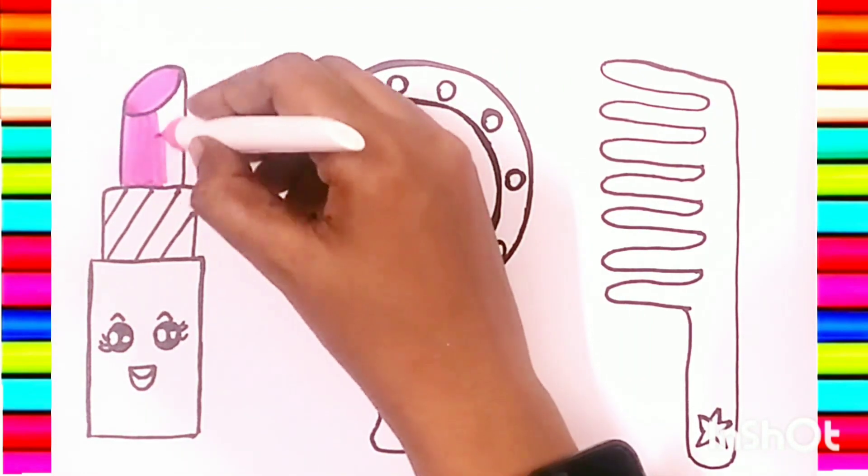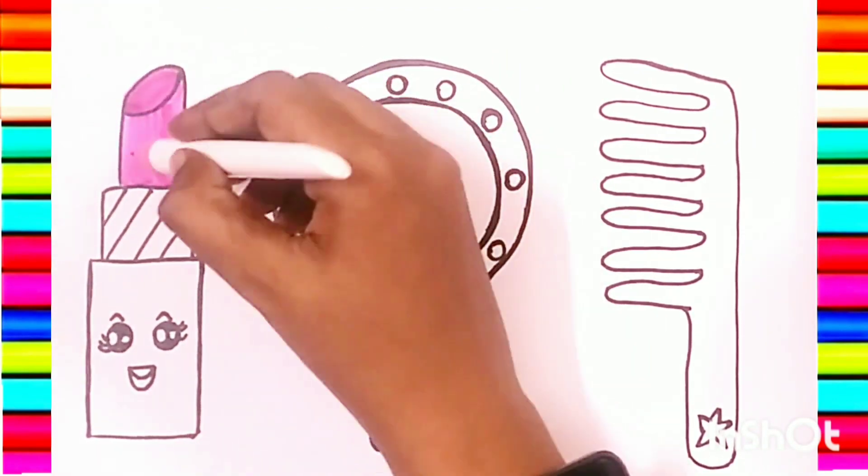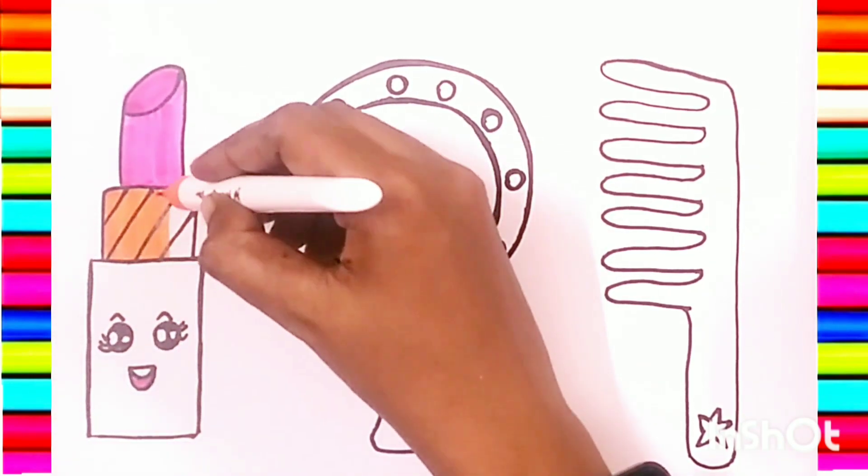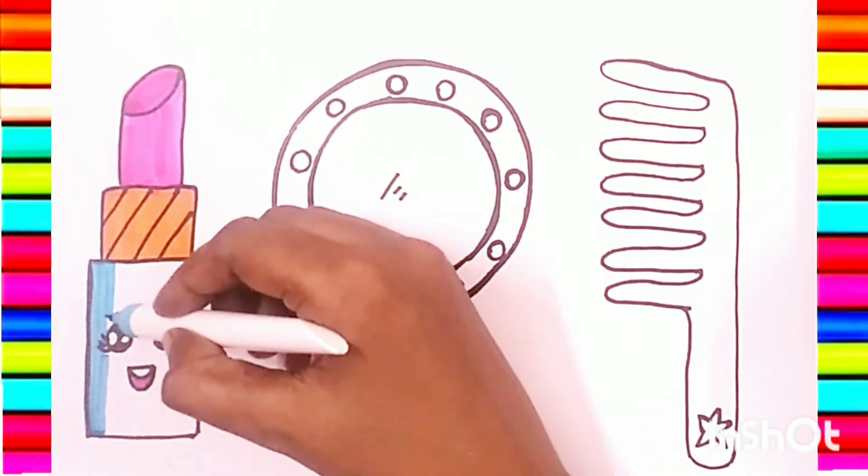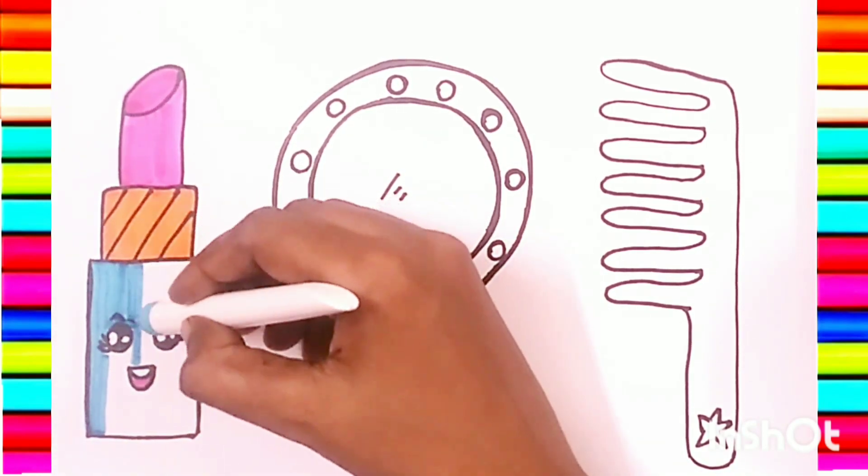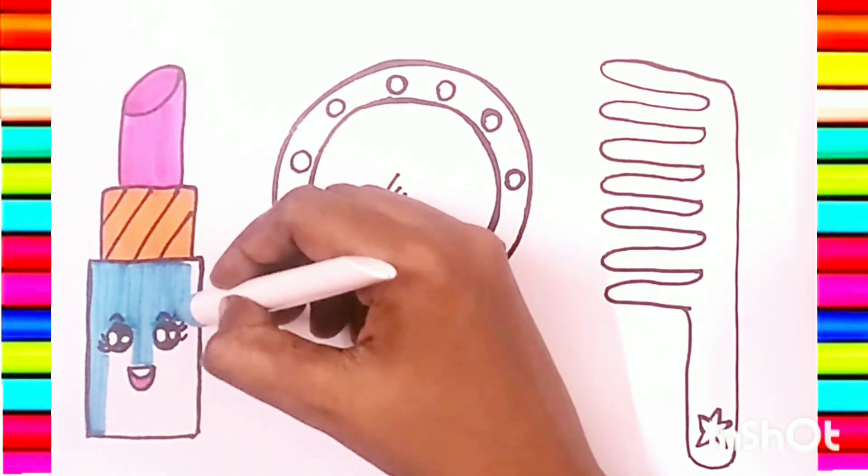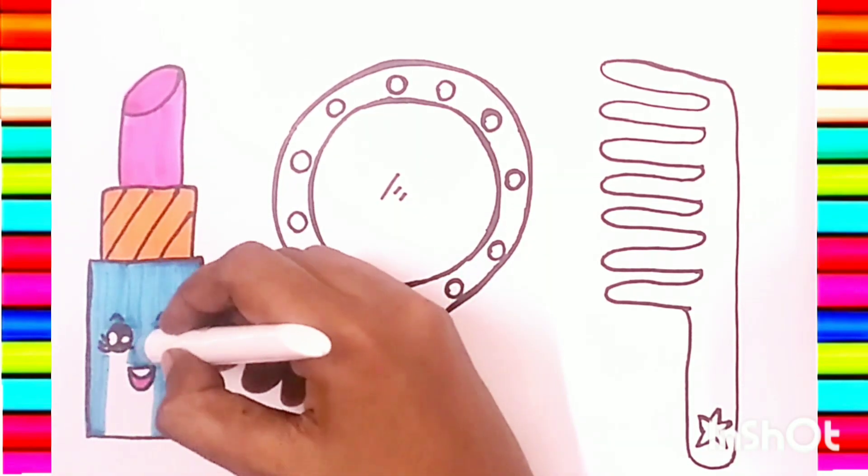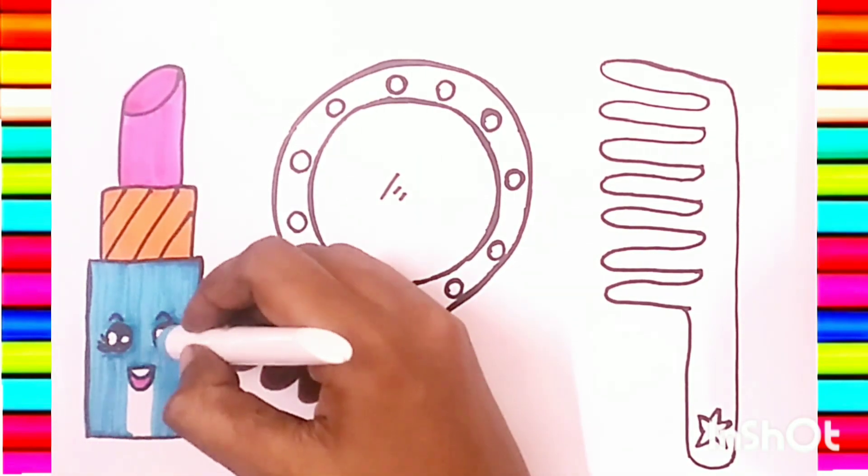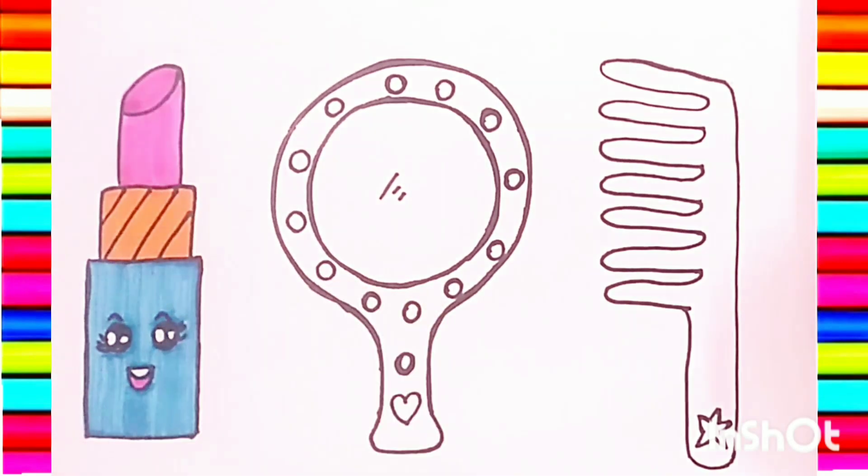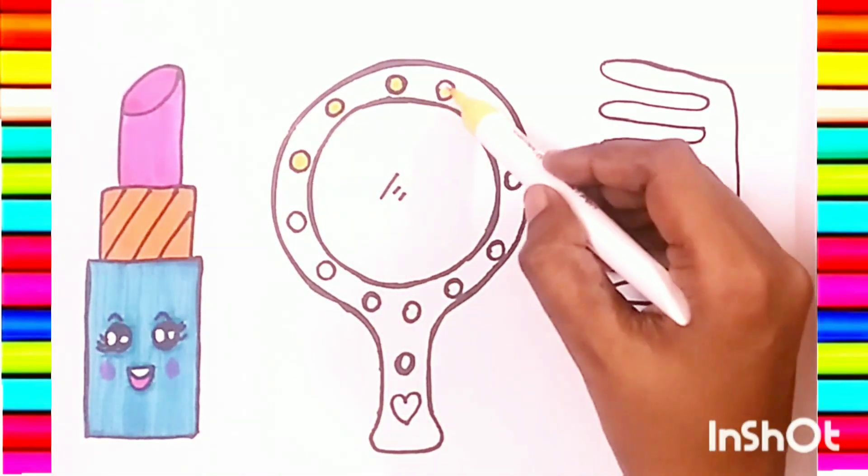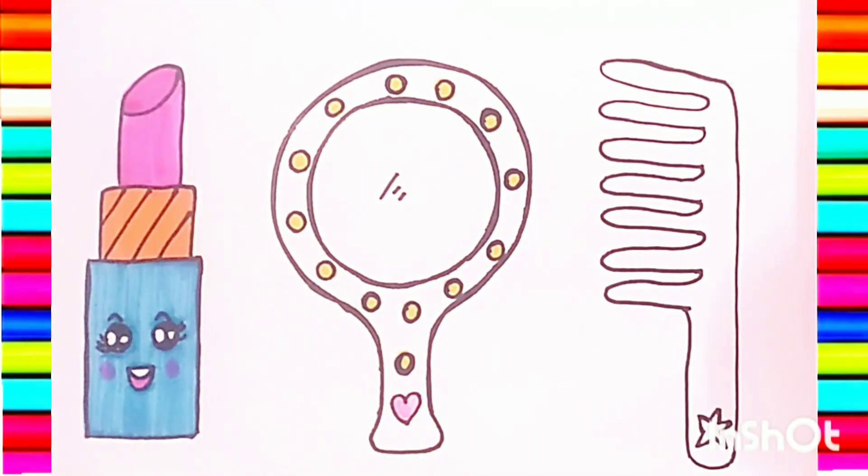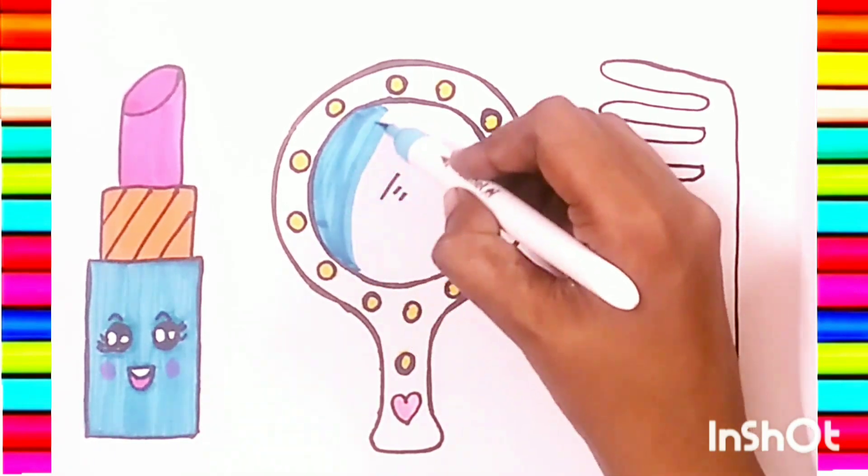It's a pink lipstick. Orange. Our favorite sky blue. My pinky. The golden yellow for the circles. Pink for the little heart. Again our favorite sky blue for the mirror.